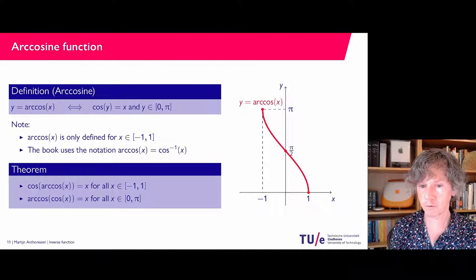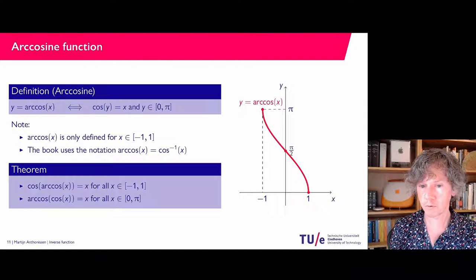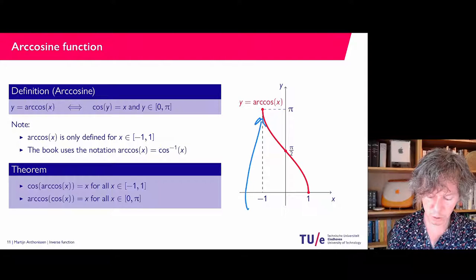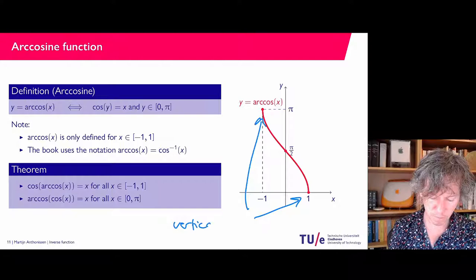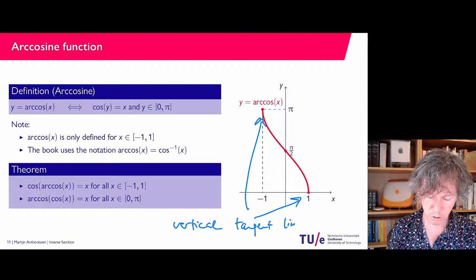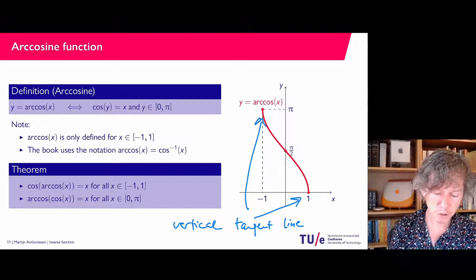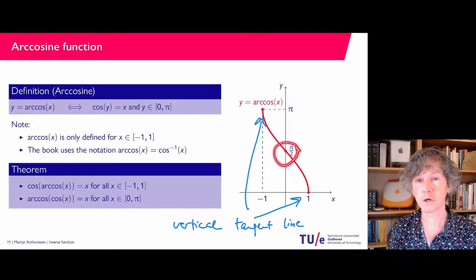We have a similar theorem: if x is between minus one and plus one they are each other's inverses, so the cosine of the arc cosine equals x. The other direction — arc cosine of cosine of x — only holds for x values in the domain we chose, on which the cosine is one-to-one. The graph of arccosine looks a lot like the arcsine function — a similar shape — and again at the two endpoints of the domain we have a vertical tangent line, so the derivative does not exist at those endpoints. The arc cosine of zero equals pi over two.